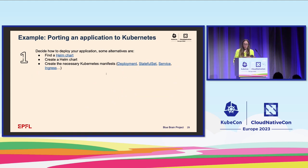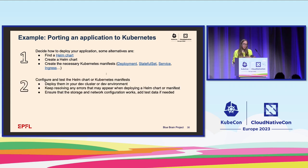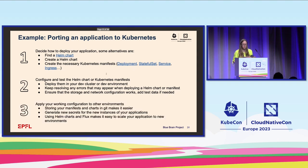As an example, if you want to move into Kubernetes, here's what you'd need to do to port your applications. First, decide how you want to deploy your application — alternatives include finding an existing Helm chart, creating a Helm chart if nobody has done it yet, or creating the necessary Kubernetes manifests like a deployment, a service, and an ingress configuration for something simple to deploy. Then go through the steps of configuring and testing the Helm charts or manifests in your dev cluster, keep resolving any errors, because a Helm chart might not work right away — and Helm chart quality varies. Ensure that storage and network configuration work, add some test data, and finally apply your working configuration to other environments. Storing your manifests and charts in Git makes it easier to use Flux to scale across environments.